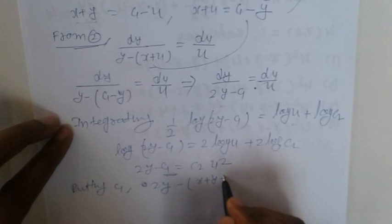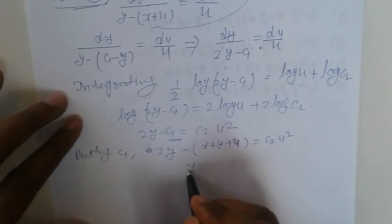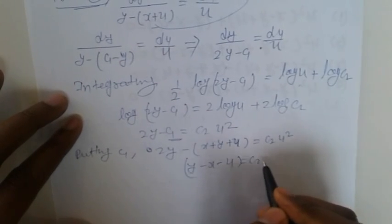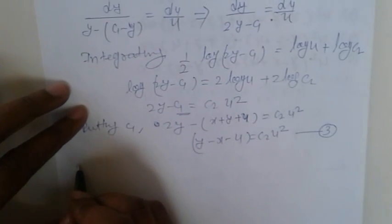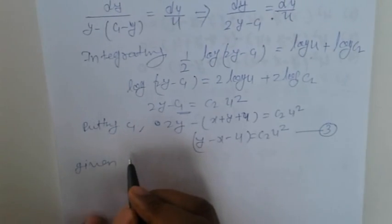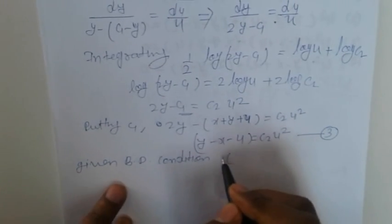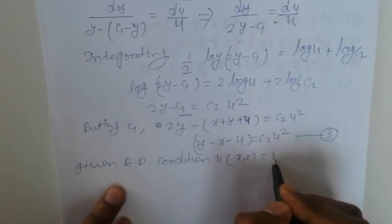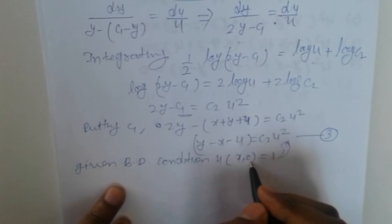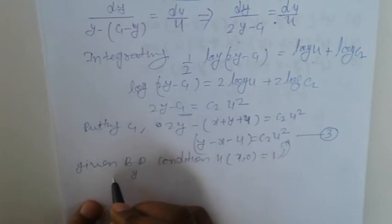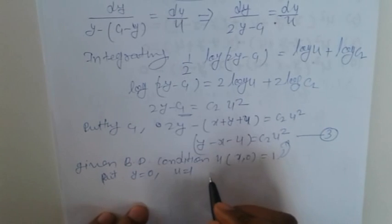The general solution simplifies to: (y minus x minus u) = c2 times u squared. Now applying the boundary condition u(x, 0) = 1, we put y = 0 and u = 1, giving: minus x = c1 and other conditions from the equations.